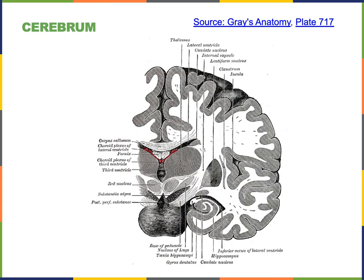Here we have a view of the brain that has been sliced through the coronal plane. This coronal section allows us to see deep to the frontal and temporal lobes, revealing the region of the cerebrum known as the insula, or the insular lobe of the cerebral cortex. The functions of the insular lobe include processes important for emotions as well as the processing of the sense of taste, also known as gustation.